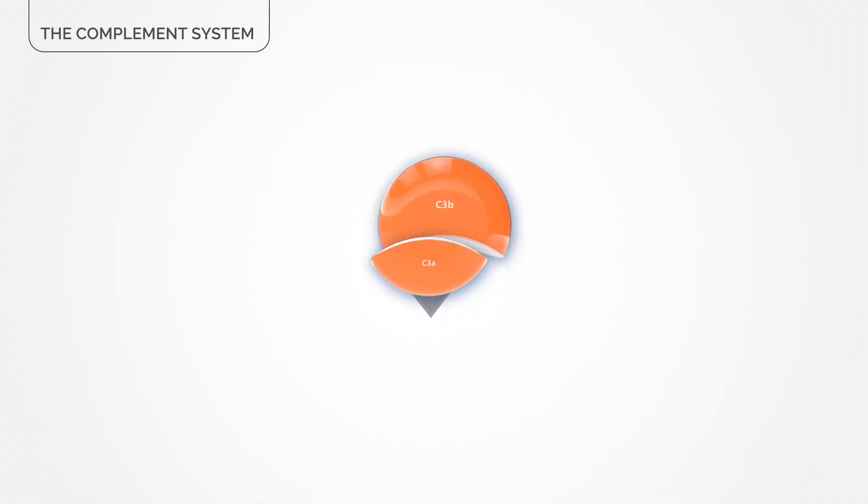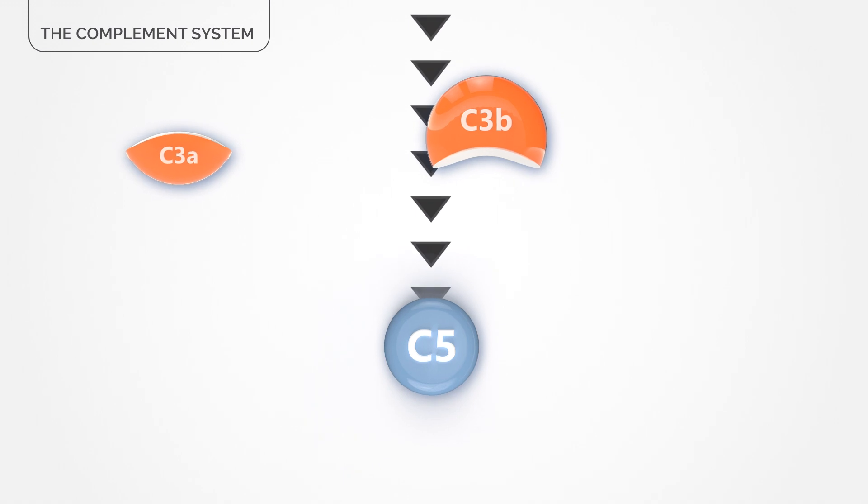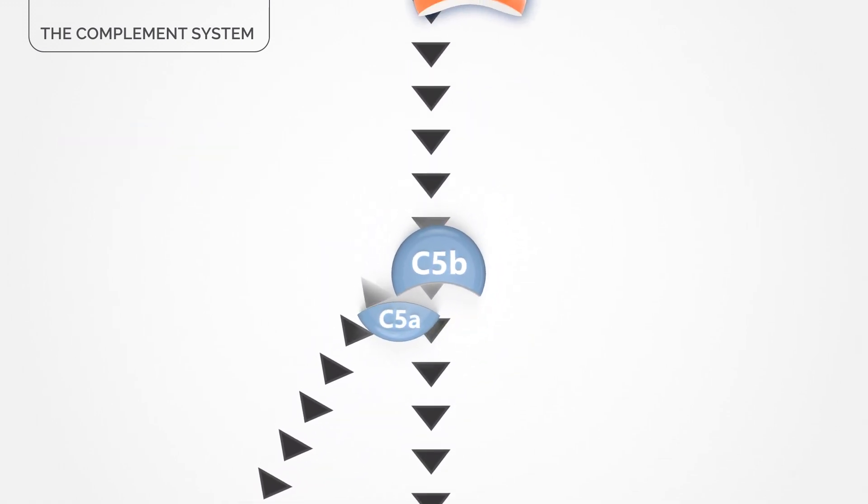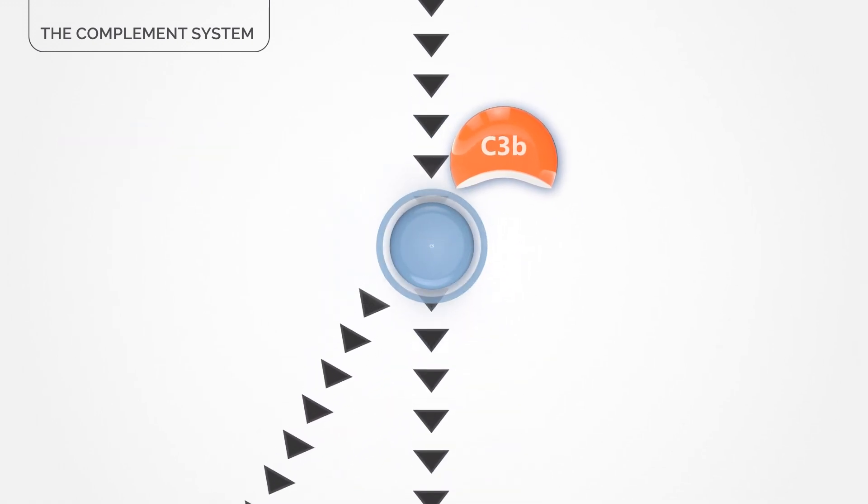The complement system consists of a cascade of proteins which activate each other by cleavage, the process of splitting each protein one by one.